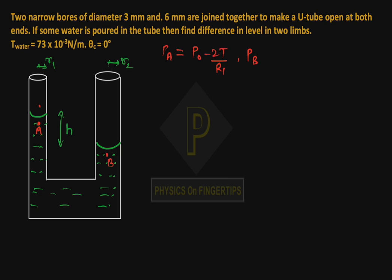Pressure is less than at the convex surface. PB equals P0 minus 2T upon R2.